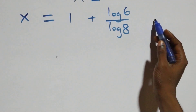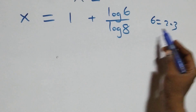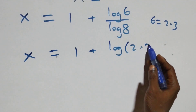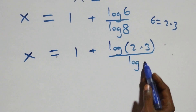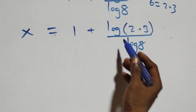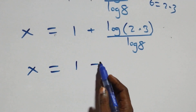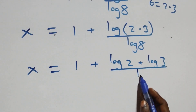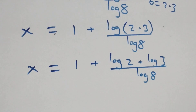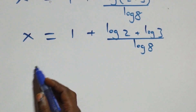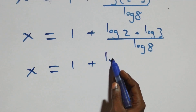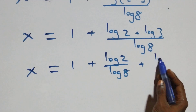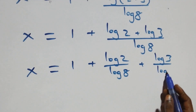From here we can write 6 as 2 times 3. So what we have becomes x = 1 + log(2 × 3) over log 8. This follows from the law of logarithms, giving x = 1 + (log 2 + log 3) over log 8. We separate this into two fractions: x = 1 + log 2 over log 8 + log 3 over log 8.